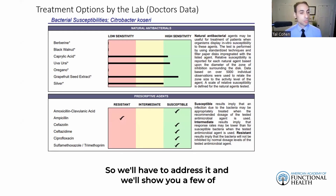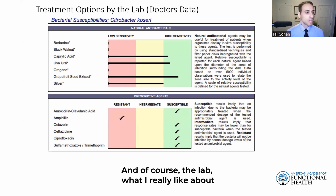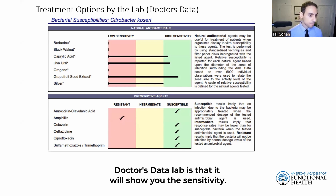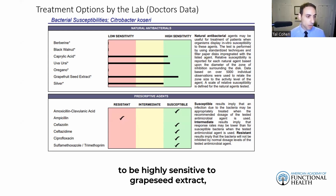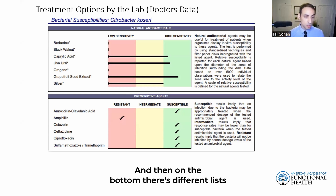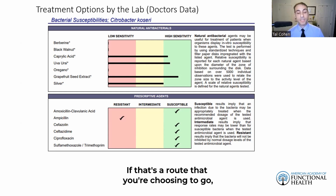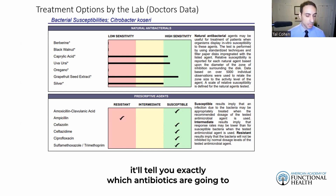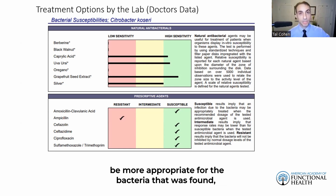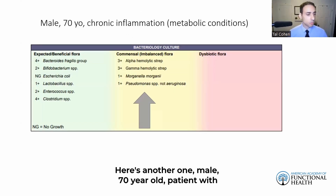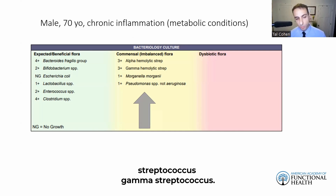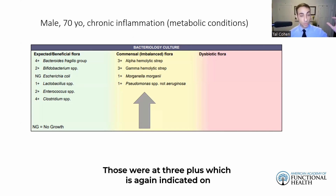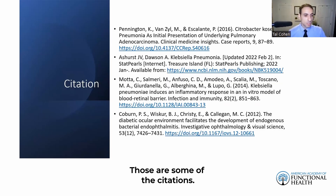An animal study by Shu et al. reported that Streptococcus might aggravate inflammatory damage in chronic nephritis through stimulation of TH-22 cells. We need to address it, and treatment protocols will be shown. What I really like about Doctor's Data lab is that it shows sensitivity — for example, Citrobacter is highly sensitive to grapeseed extract and caprylic acid. There's also a list of antibiotics, telling you which are most appropriate for the bacteria found. Another patient: a 70-year-old male with chronic inflammation and metabolic conditions showed alpha-hemolytic and gamma-hemolytic Streptococcus both at three plus — again an elevated amount.